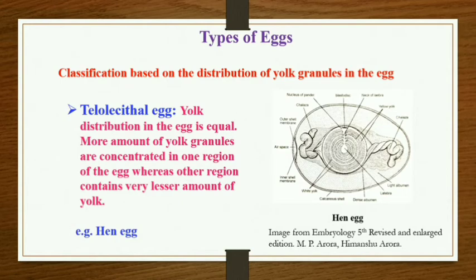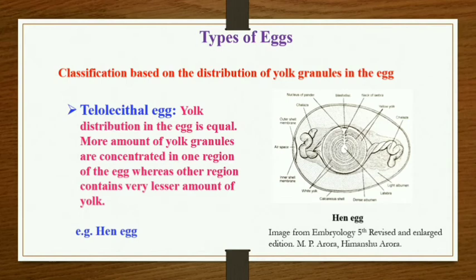This part which is heavily laden with yolk granules is referred to as the vegetal pole. Birds and reptiles show this kind of egg. If you see in the diagram, there is a large amount of yolk present. The entire egg is comprising of yolk and the cytoplasm is only present in the form of a small disc called the blastodisc. This blastodisc will actually develop into an embryo if the egg is fertilized.